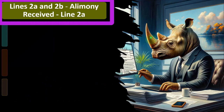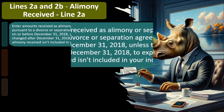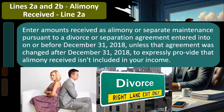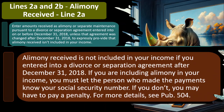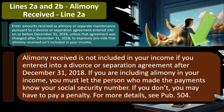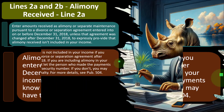So lines 2A and 2B. On line 2A, enter amounts received as alimony or separate maintenance pursuant to a divorce or separation agreement entered into on or before December 31st, 2018, unless that agreement was changed after December 31st, 2018, to expressly provide that alimony received isn't included in your income. Alimony received is not included in your income if you entered into a divorce or separation agreement after December 31st, 2018. If you are including alimony in your income, you must let the person who made the payments know your social security number — they're going to report you to the IRS because they have to in order to get the deduction.